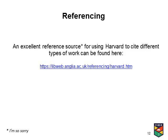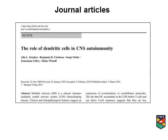An excellent reference source for using Harvard to cite different types of work can be found online — this lists all the different types of source referencing material you may come across, from newspaper articles to chapters in edited books. It's very useful, and with this you have no reason not to understand how to reference correctly.